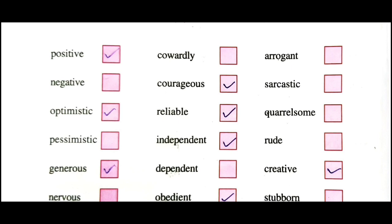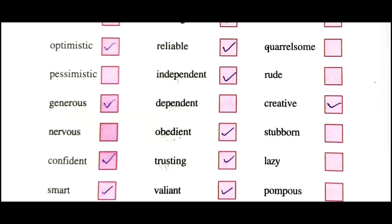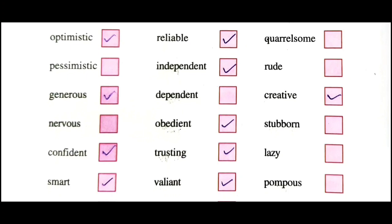Next one: 'cowardly' - this is a bad quality and Nick does not possess this bad quality, so we do not tick it. Next one: 'courageous' - courageous means having bravery, dhairiya, so tick it. Next: 'sarcastic' - this is a bad quality Nick does not have, so we don't tick it. Next: 'optimistic' - optimistic means being hopeful about the future, so Nick is optimistic, tick it.